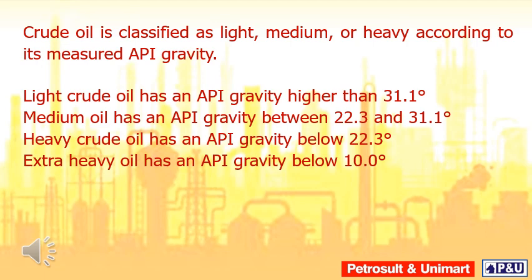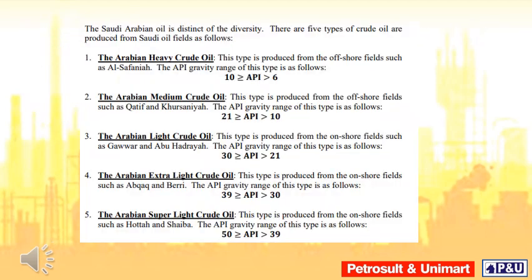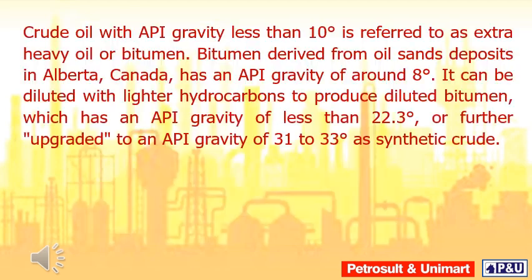Extra heavy oil has an API gravity below 10.0 degrees. Crude oil with an API gravity less than 10 degrees is referred to as extra heavy oil or bitumen.